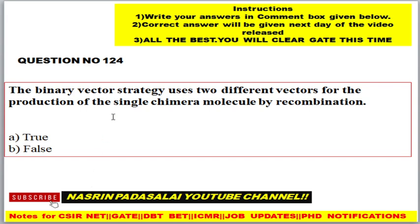Question number 124 (True or False): The binary vector strategy uses two different vectors for the production of a single chimeric molecule by recombination. Options: A) True, B) False.